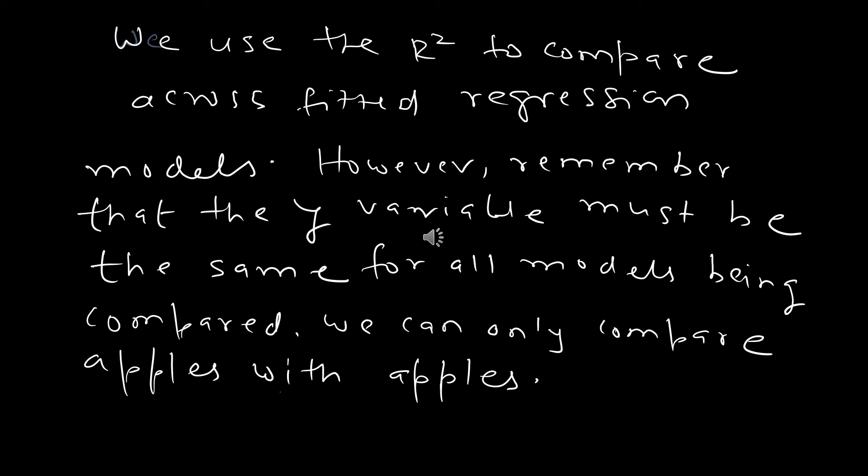R-squared is a very important measure when comparing two regression equations, because it tells you what proportion of the variation in Y is explained by a particular model. If model A has an R-squared of 0.8 and model B has an R-squared of 0.6, then model A is preferable because it explains a greater proportion of the variability in Y. It is important that both models have the same dependent variable — you are comparing apples to apples. If one model has dependent variable Y and the other has log of Y, you cannot compare their R-squares.